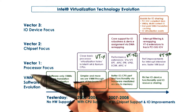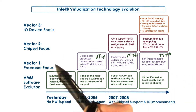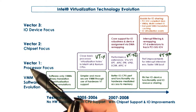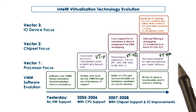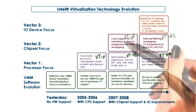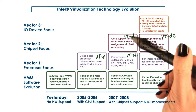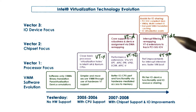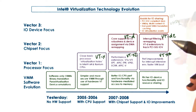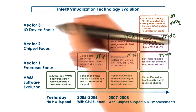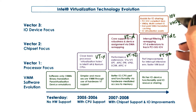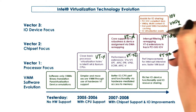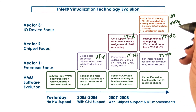The architecture versions that encapsulate these modifications are referred to as VTX for modifications along the first vector, with VTX2 and VTX3 occurring in subsequent generations of processors. Then VTD for the advances along the second dimension, and so forth. The architecture modifications along the third vector are encapsulated into what's referred to as IOV — IO virtualization technology — and VMDQ, which stands for Virtual Machine Device Queues. This is device-resident support.